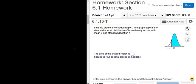Find the area of the shaded region. The graph depicts the standard normal distribution of bone density scores with a mean of 0 and standard deviation of 1.